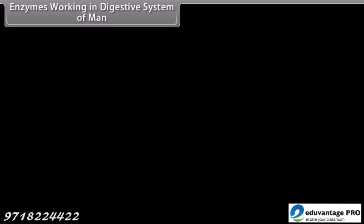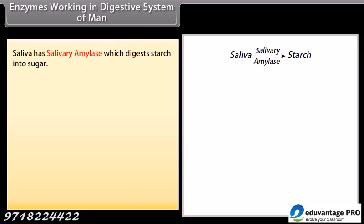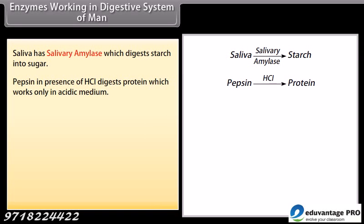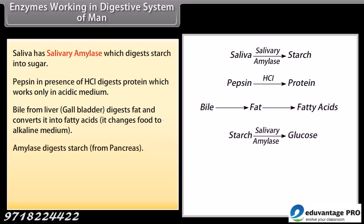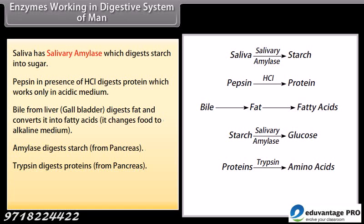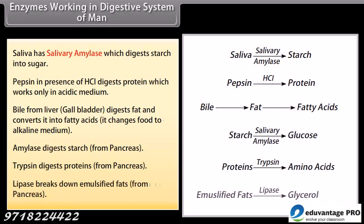Saliva contains salivary amylase, which digests starch into sugar. Pepsin, in the presence of HCl, digests protein and works only in an acidic medium. Bile from the liver and gallbladder digests fat, converting it into fatty acids, and changes food to an alkaline medium. From the pancreas, amylase digests starch, trypsin digests proteins, and lipase breaks down emulsified fats.